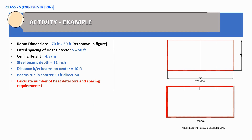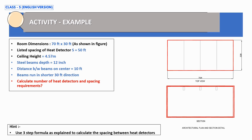As a hint: use the three-step formula already explained to calculate the spacing between heat detectors. Note there is a table to calculate design spacing when ceiling height is more than 3 meters. Since this building has beams, apply the additional reduction factor for beams and then calculate the number of heat detectors and spacing requirements. Put your solution in the comment section and I will confirm whether your answer is correct.